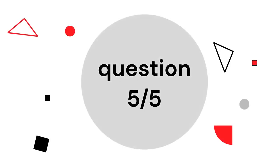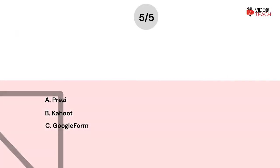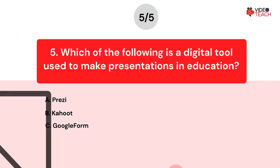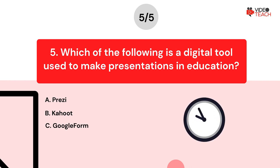Let's go to the last question, question number five. Which of the following is a digital tool used to make presentations in education? Option A: Prezi. Option B: Kahoot. Option C: Google Form. Now you have about 15 seconds to think about your answer.